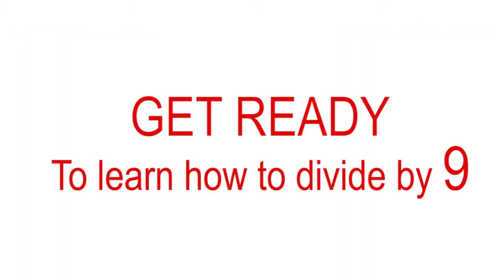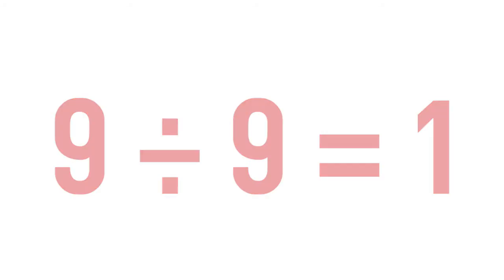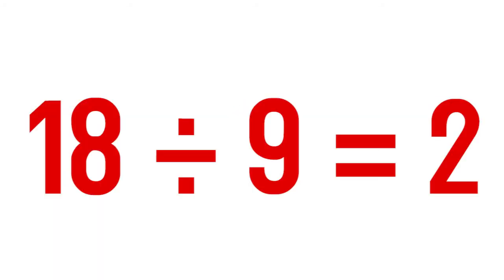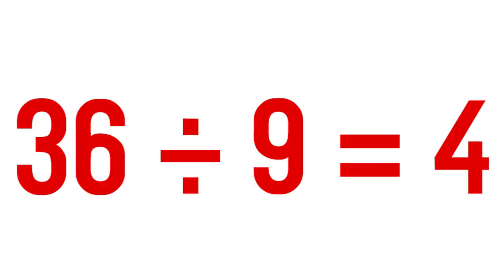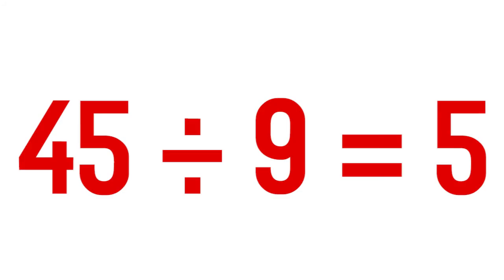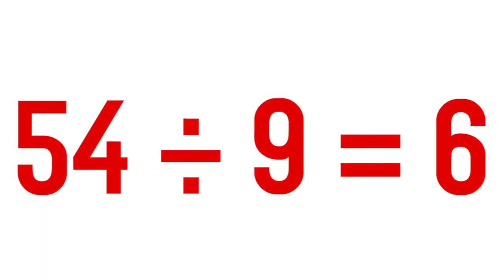Get ready to learn how to divide by 9. 9 divided by 9 equals 1. 18 divided by 9 equals 2. 27 divided by 9 equals 3. 36 divided by 9 equals 4. 45 divided by 9 equals 5. 54 divided by 9 equals 6.